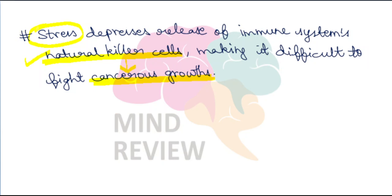Humara immune system mein cells hote hain jinhein hum bolte hain natural killer cells. Natural killer cells kya karte hain — jo cancerous growth hoti hai, tumour ki growth hoti hai, unko fight karte hain — basically they are helping us to protect ourselves from these tumours and cancerous growths. But if a person is continuously under chronic stress, toh woh stress immune system ke natural killer cells ke release ko kam karta jaata hai.